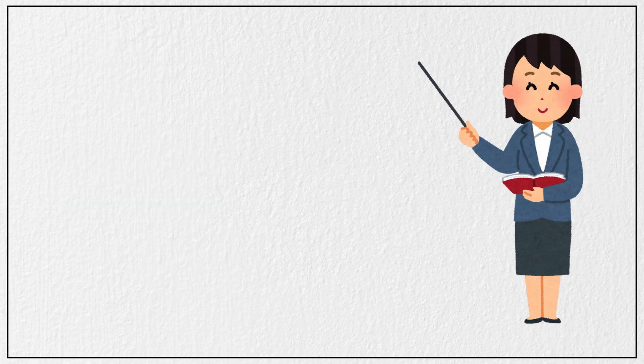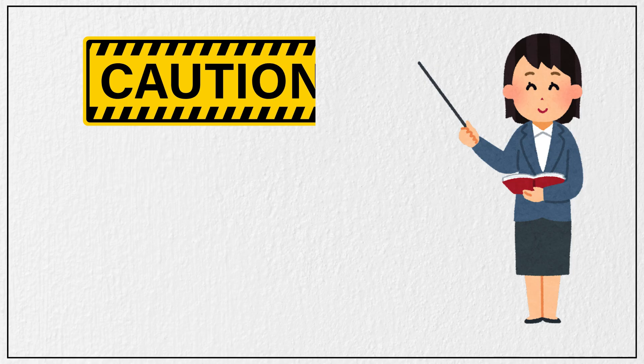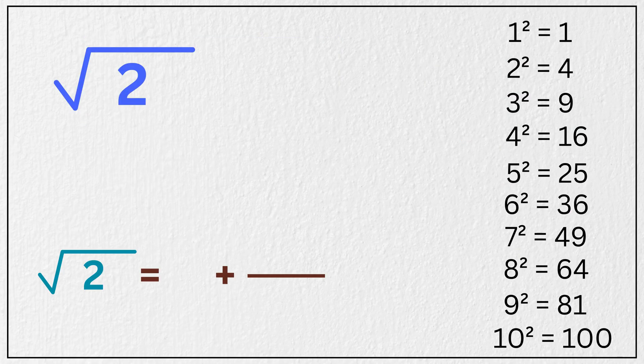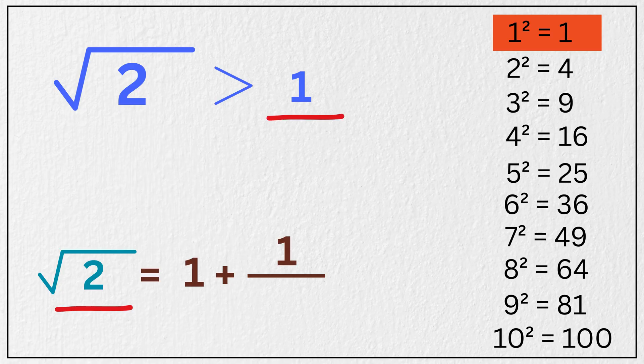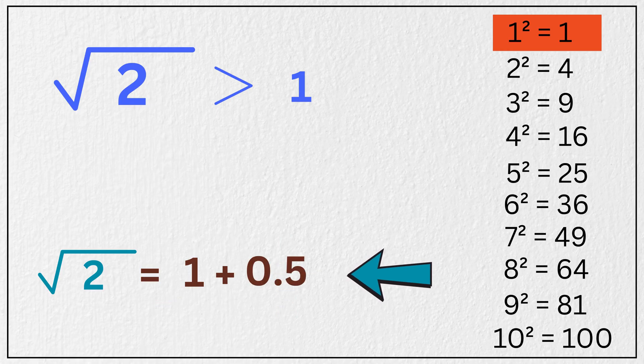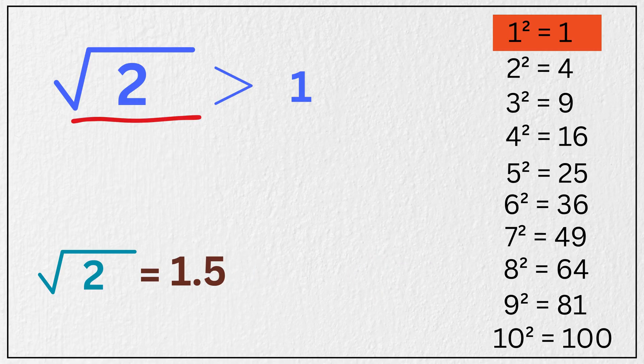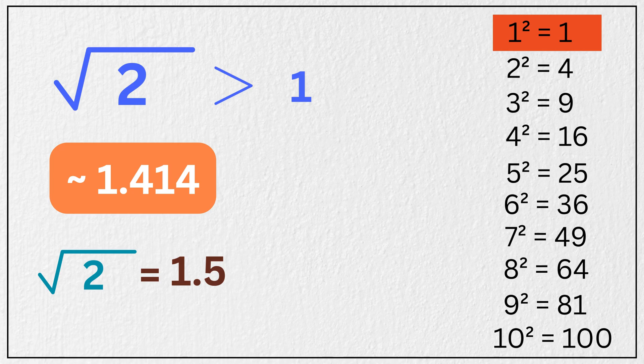Alright, now here is where you need to be careful. Let us estimate the square root of 2 using this method. The square root just below 2 is 1. Its root is 1. 2 minus 1 is 1. Multiplying this with 2, we get 2. 1 over 2 is 0.5. So our estimate is 1.5. But the real square root of 2 is about 1.414. So we are a bit off.